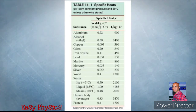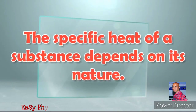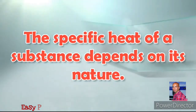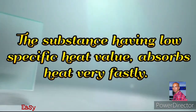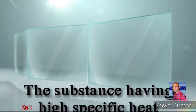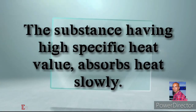Here is a table showing the specific heats of different materials. Aluminum has 0.22, copper has 0.093. Water has the highest specific heat value of 1. The substance having a low specific heat value absorbs heat very fast. And the substance having a high specific heat value absorbs heat slowly.